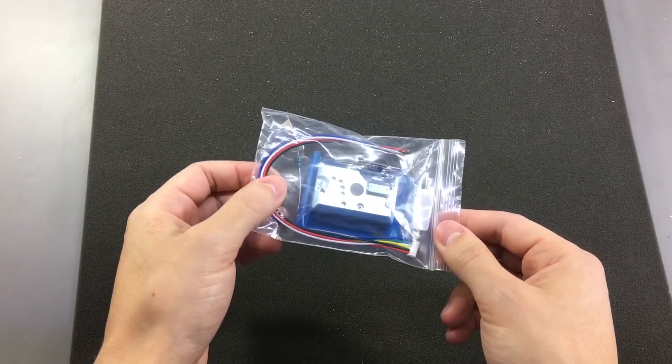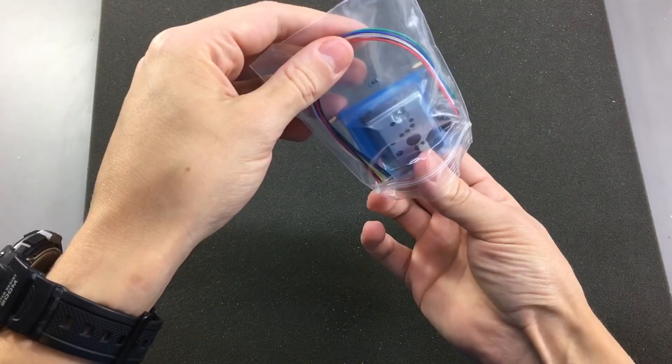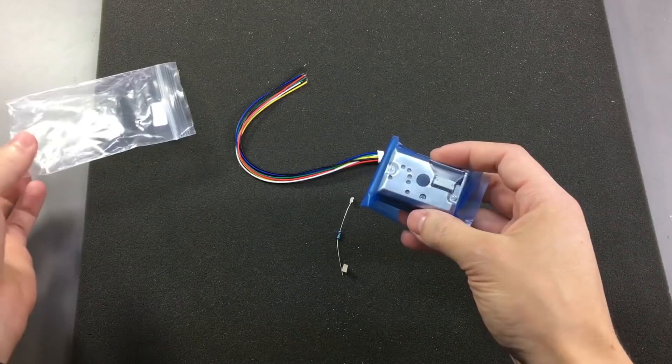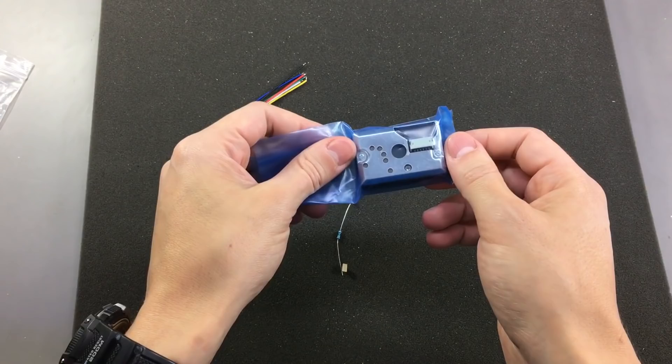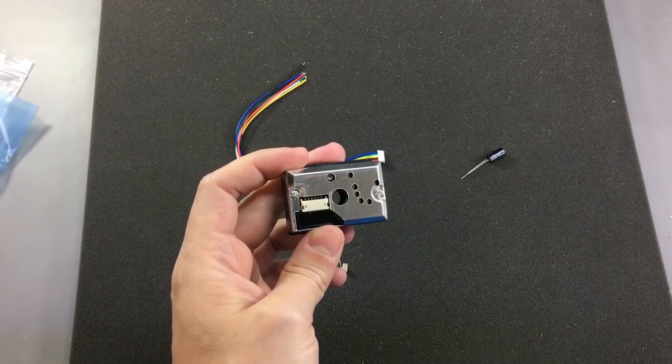Next, we have this dust sensor, which has a rather long part number, you'll find that in the description below. It should be made by Sharp, but considering it's coming from China and I only paid like 4 dollars, shipping included, you might have doubts about it being genuine. So this is how the sensor looks like, I'm tempted to remove this cover and see how it looks inside, so let's do that.